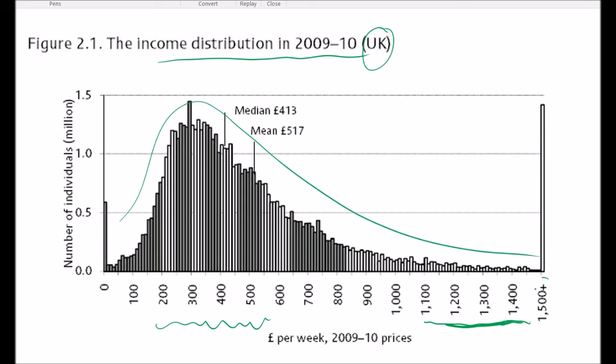This right here you can see is 1500 plus. So pay no attention to this. It's not meaningful. So this sort of distribution of wealth is very, very similar to the distribution of energies within a population of molecules.